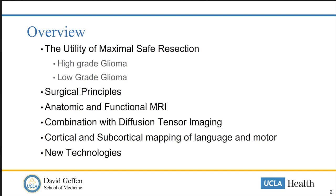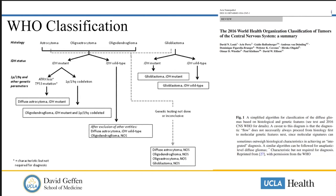A quick overview of what we're going to talk about tonight: the utility of maximal safe resection and how we apply that to both high and low-grade gliomas, surgical principles of neuro-oncology, the use of anatomic and functional MRI, the combination of that with diffusion tensor imaging, and how we map cortical and subcortical language and motor functions. Then we'll touch on some emerging new technologies and how we are looking forward to applying them into neurosurgical oncology for malignant brain tumors.